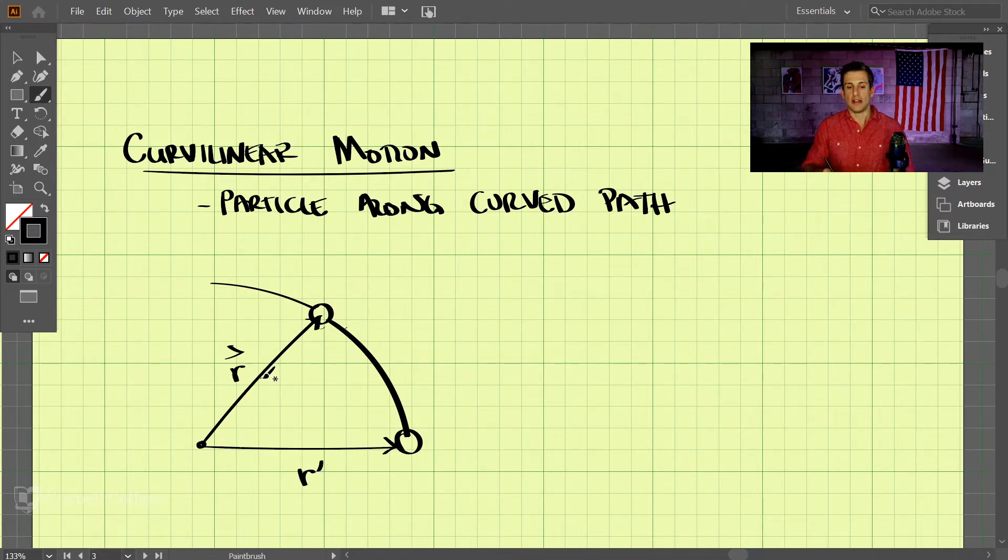If we want to find the average velocity of this particle in vector form, we would want to do the change in r, the change in that r vector from here to here, over the change in time.